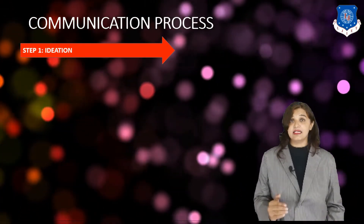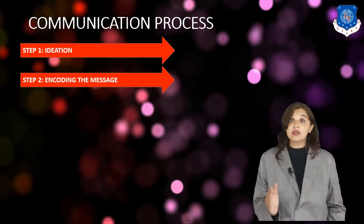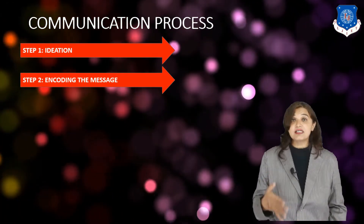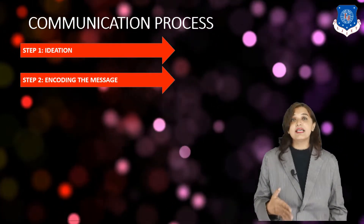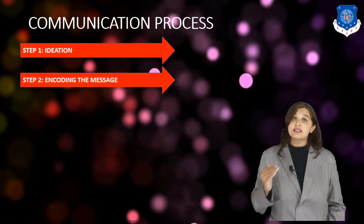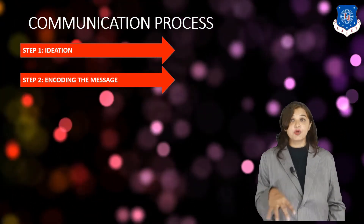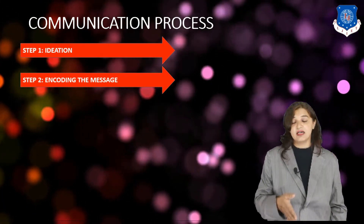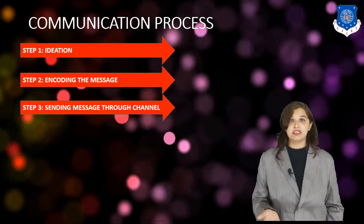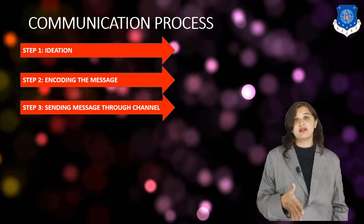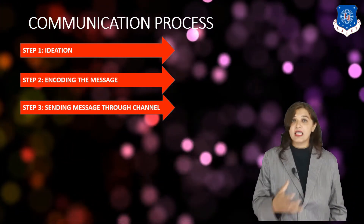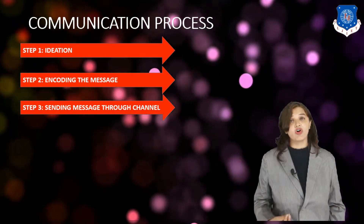Once ideation has happened, the sender will have to convert this idea or thought into a message which the receiver can understand. This conversion of an idea into a message is called encoding, and that is step two of the communication process. Once the idea is converted into a message — put into words the receiver can understand — this message has to go to the receiver through a channel or a medium, which is called sending the message through the channel. We use air, a network, or any kind of media as the channel.